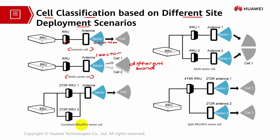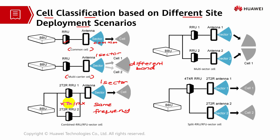The third example is the combination scenario. In this combined RFU and RRU sector cell, they work on the same frequency and together they provide one sector. To achieve greater RF capacity, if the RRU or RFU processing capabilities do not match the antenna, that is where you need to combine. Only RRUs that work in 1T1R or 2T2R mode can be combined.